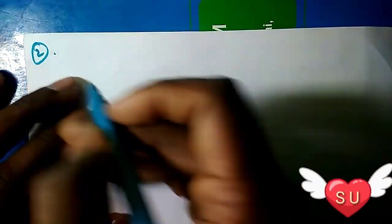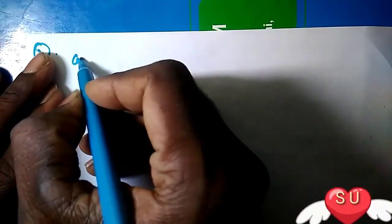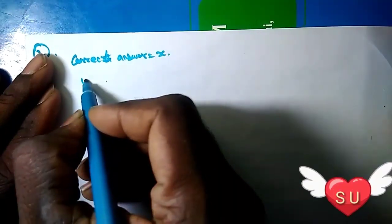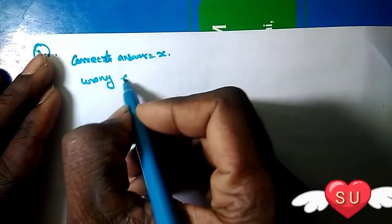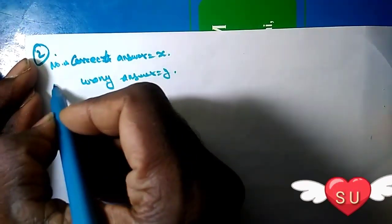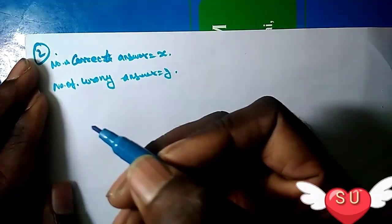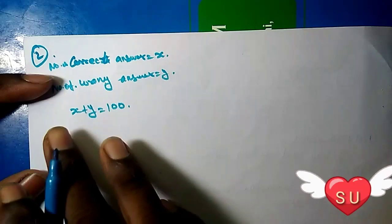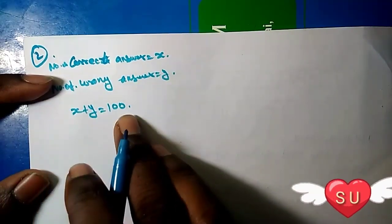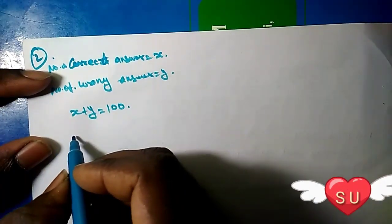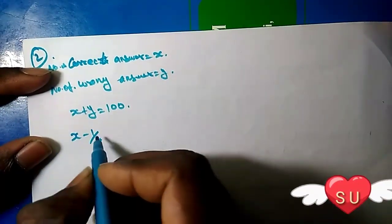Let x be the number of correct answers and y be the number of wrong answers. The total number of questions is 100, so x plus y equals 100. For the marks, each correct answer gives 1 mark and each wrong answer deducts 1/4 mark.